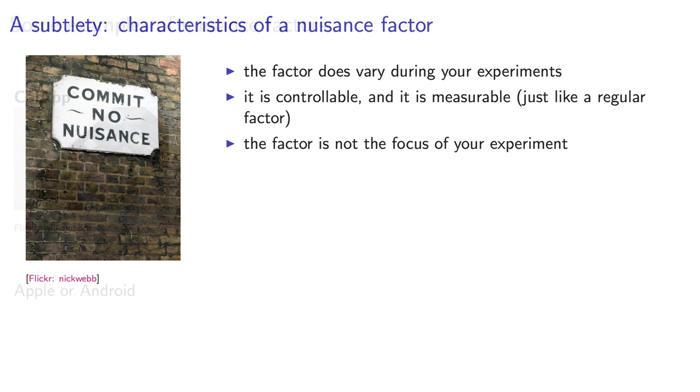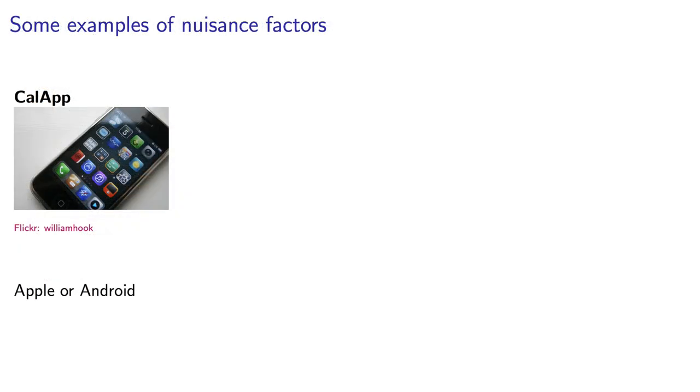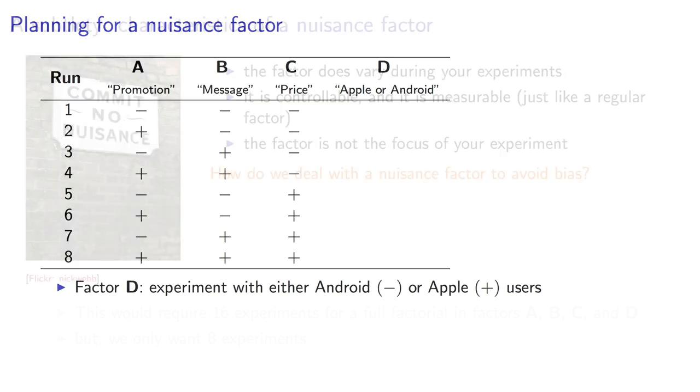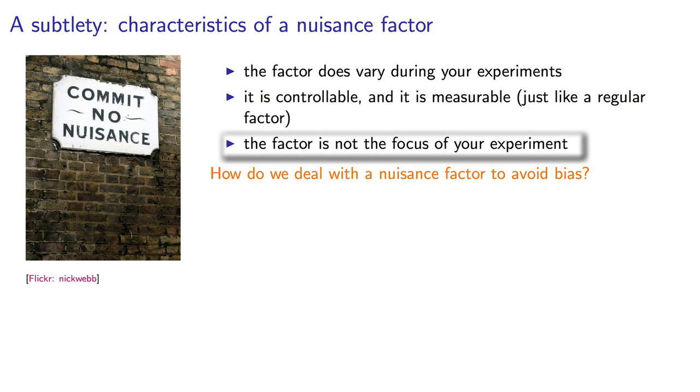Let's take a look at the cell phone example again. The end user could be on an Apple or Android operating system. You could control this because you can select only Apple or Android users during your experiments. In fact, this could have been another factor. You might have called it factor D. But this really isn't expected to be a significant factor of interest. It's not what the aim of your experiments are about.